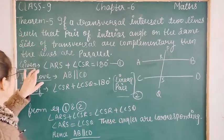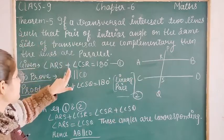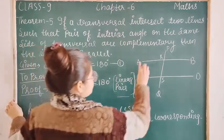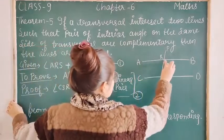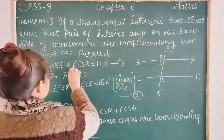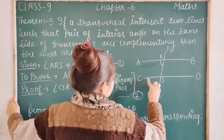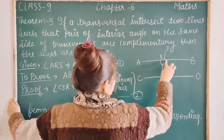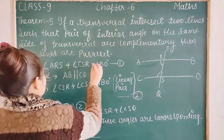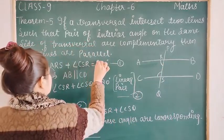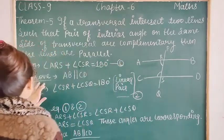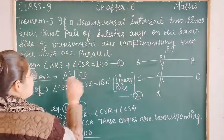Given that angle ARS plus angle CSR equals 90°. Angle ARS plus angle CSR plus angle CSR equals 180°. We have to prove that the two lines are parallel.